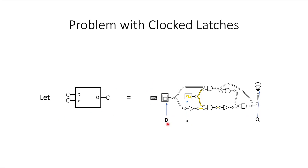D corresponds to the data input, greater-than corresponds to the clock input, and Q is the output.